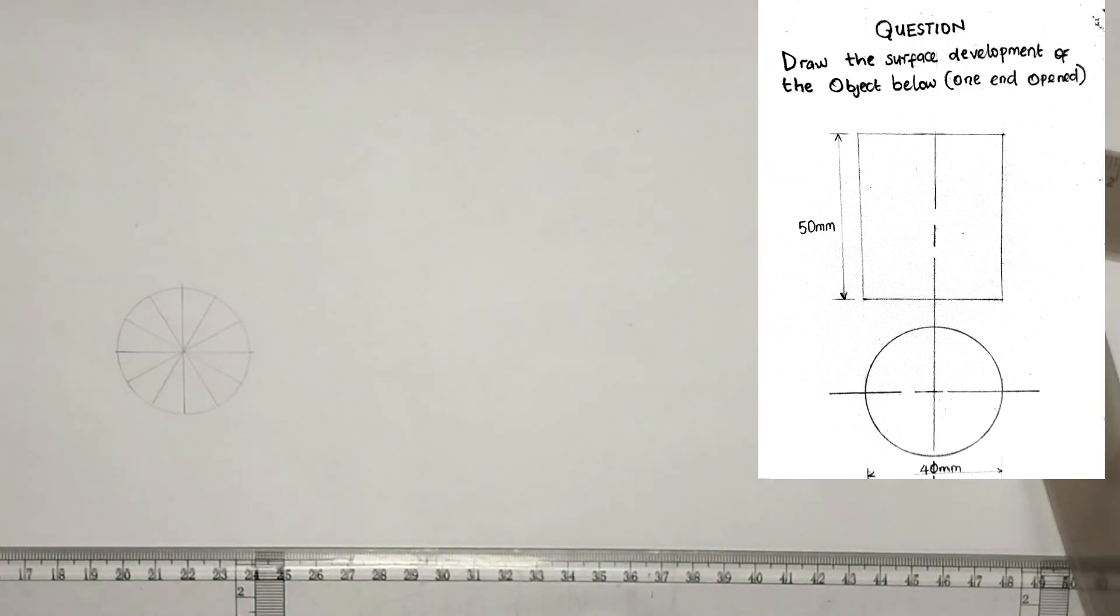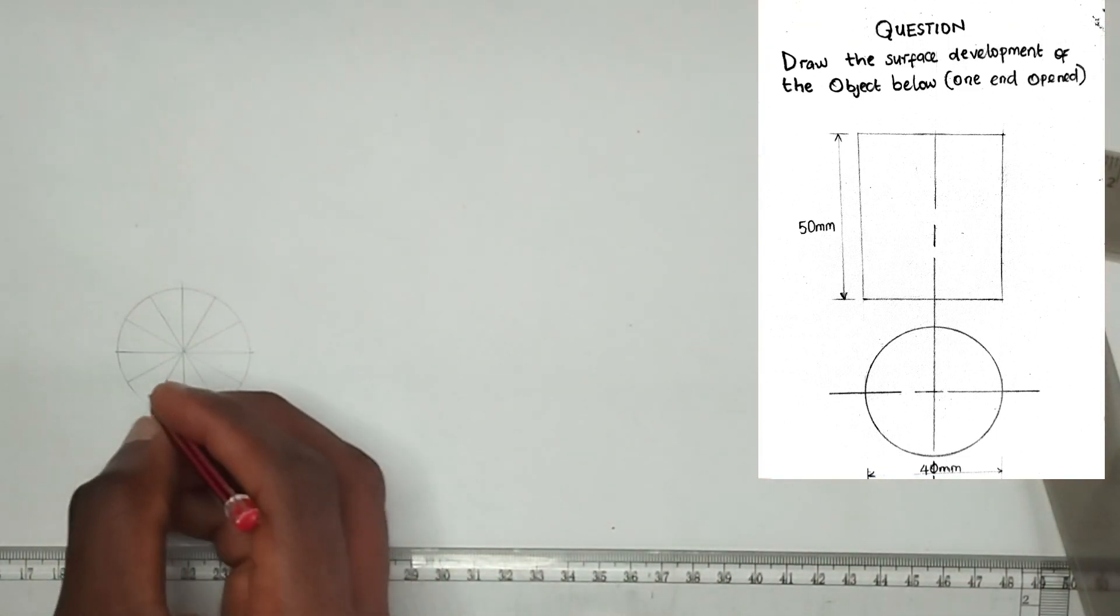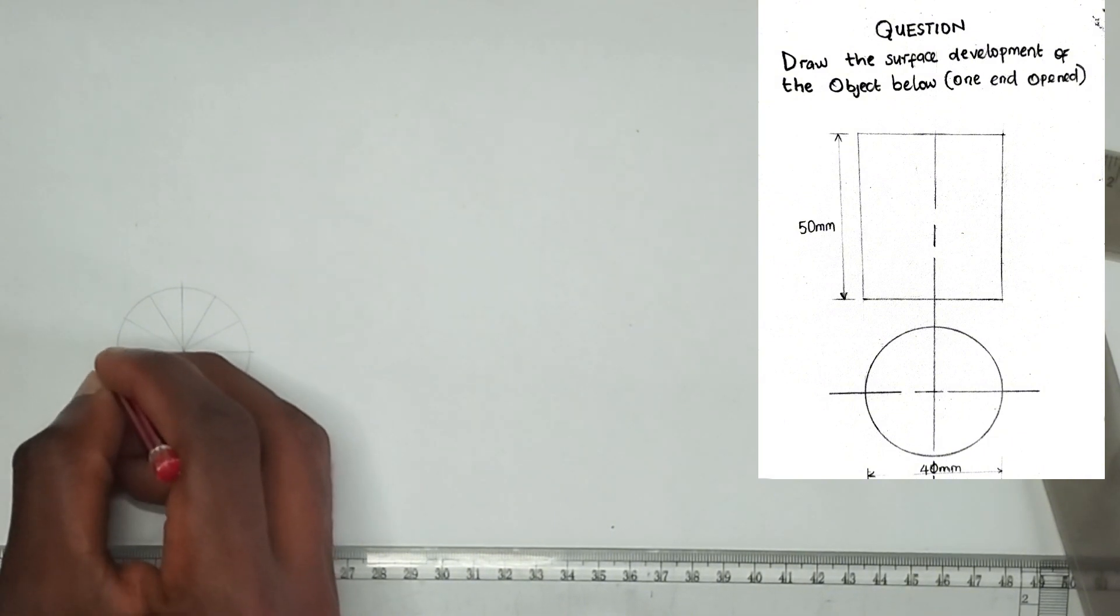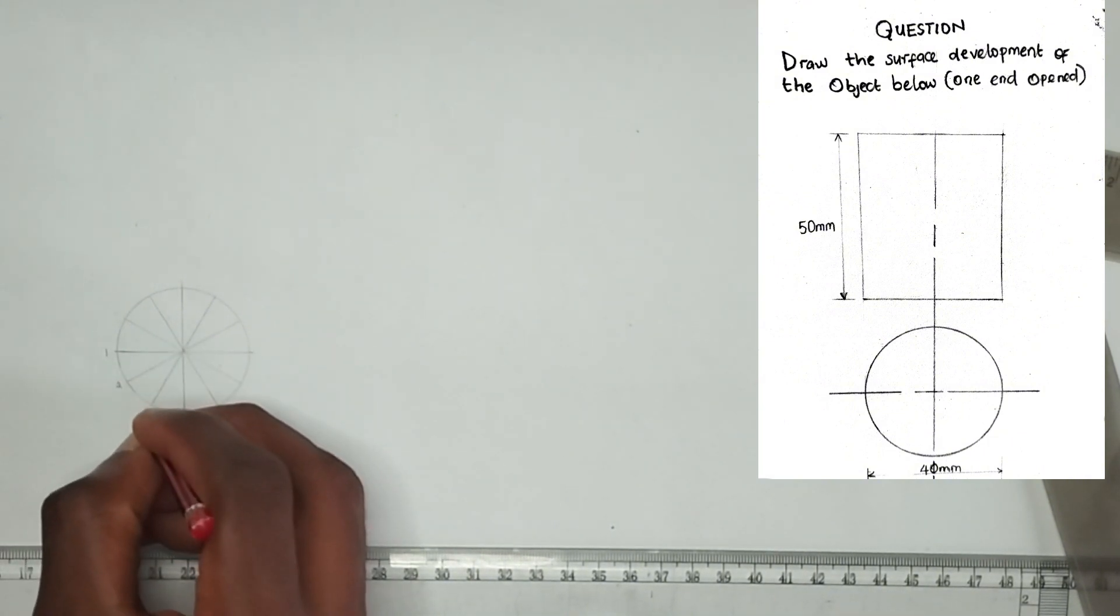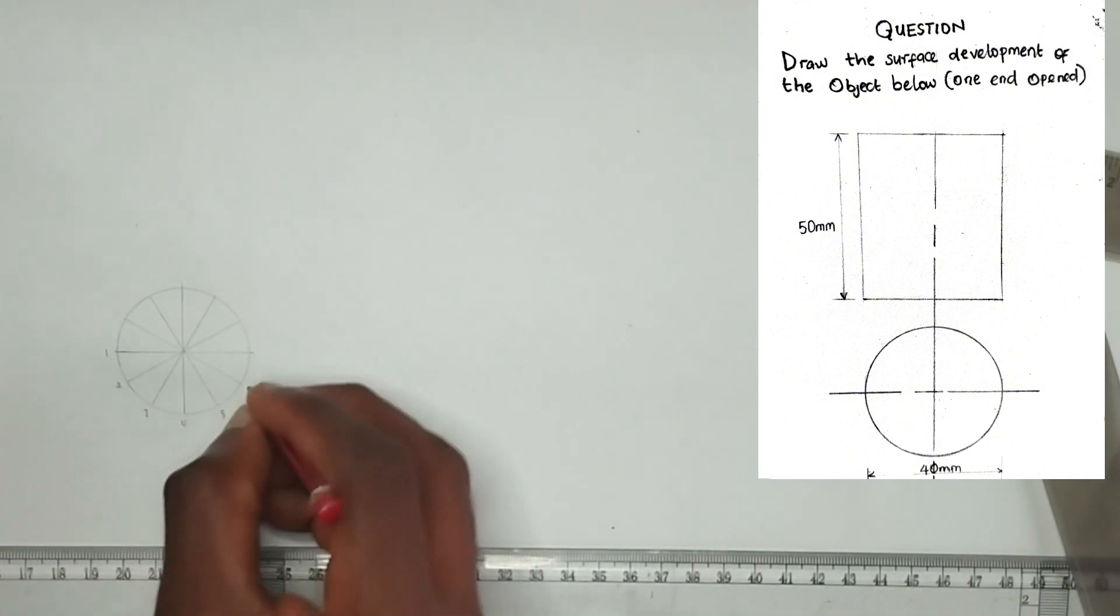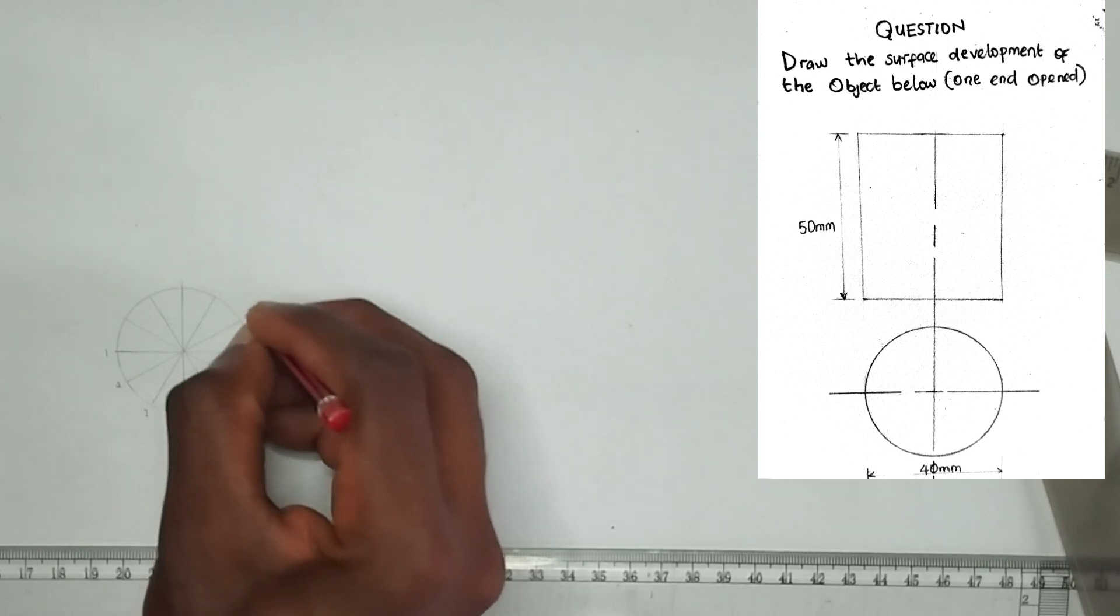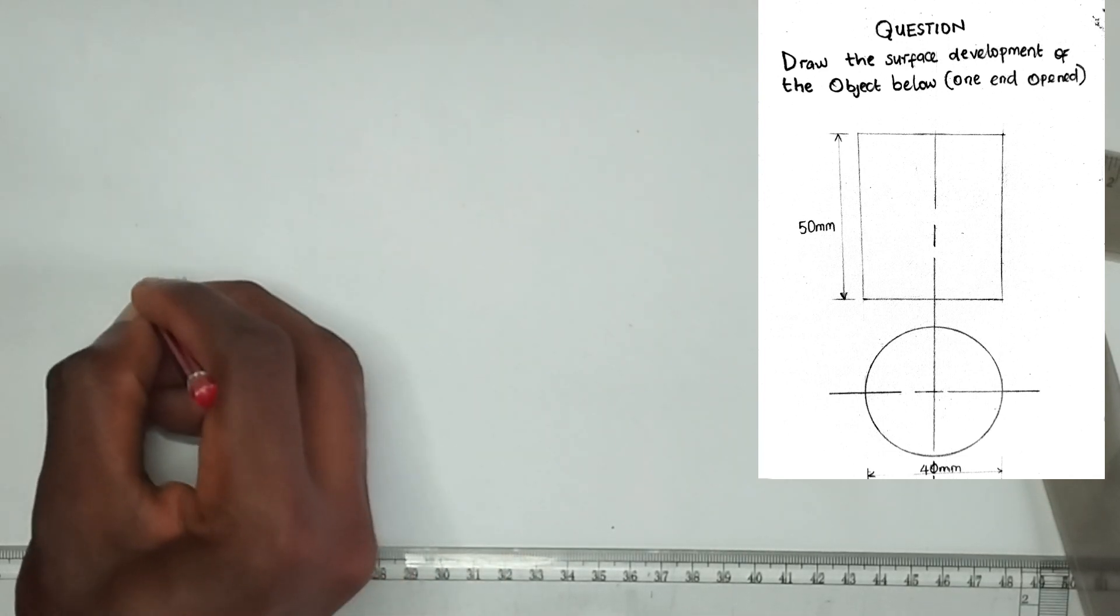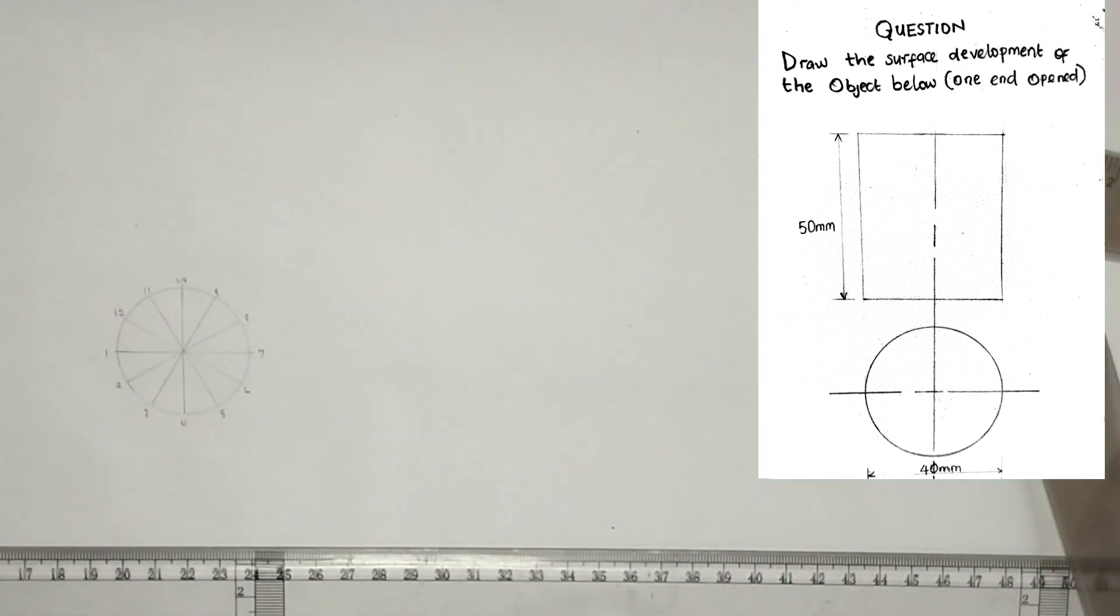All right, so now the next thing for us to do is to label the points. Now I'll label this point as point 1, 2, 3, this is 4, 5, 6, 7, 8, 9, 10, 11, and 12.